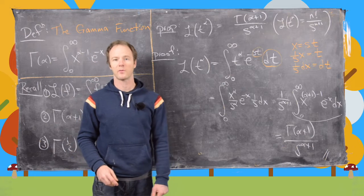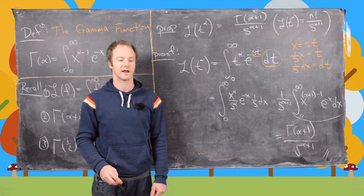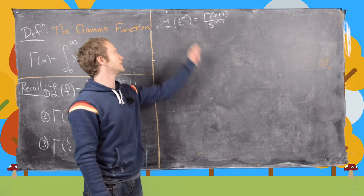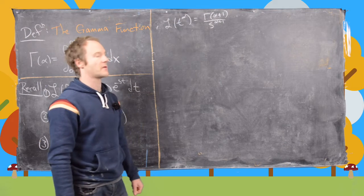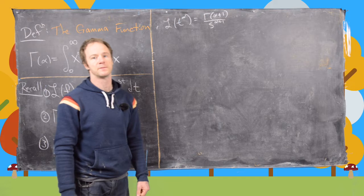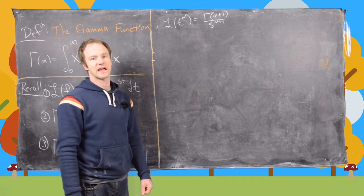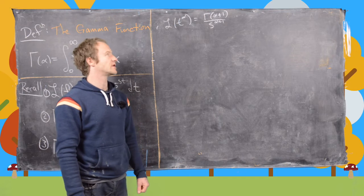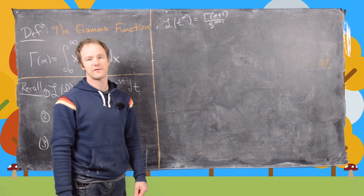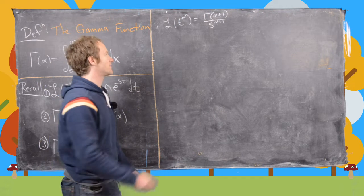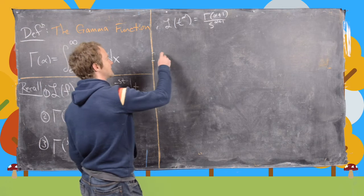That finishes the proof of this proposition. I'll clean up the board and then we'll look at an application. So we just proved the formula: Laplace transform of t to the alpha equals gamma of alpha plus 1 over s to the alpha plus 1. We're going to look at a couple of applications of that.